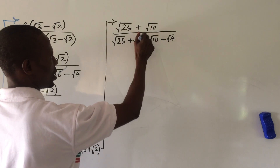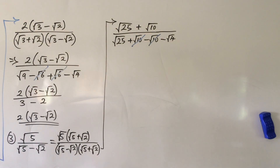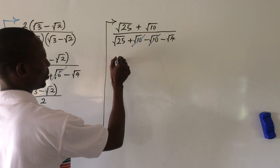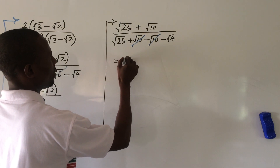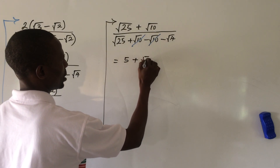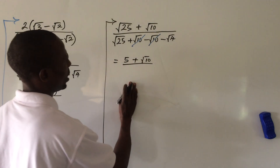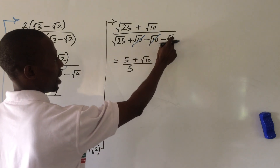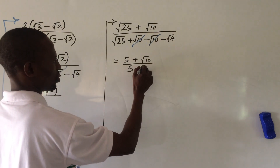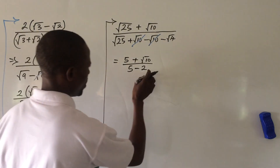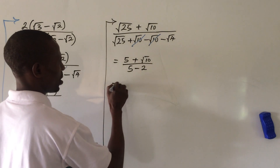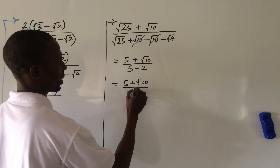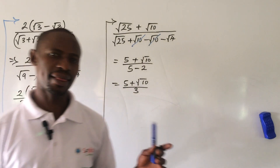Plus root ten minus root ten in the denominator cancel out and leave the system. Root 25 is 5, so the denominator becomes 5 minus root four. Root four is 2, so we have 5 minus 2. Carrying out the subtraction gives us 5 plus root ten all over 3.